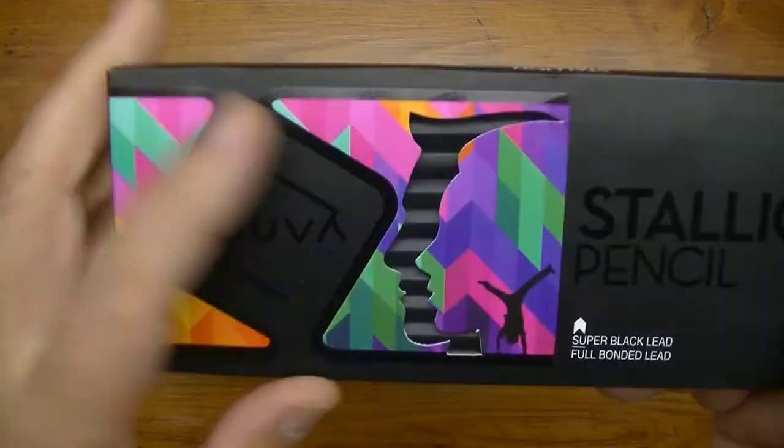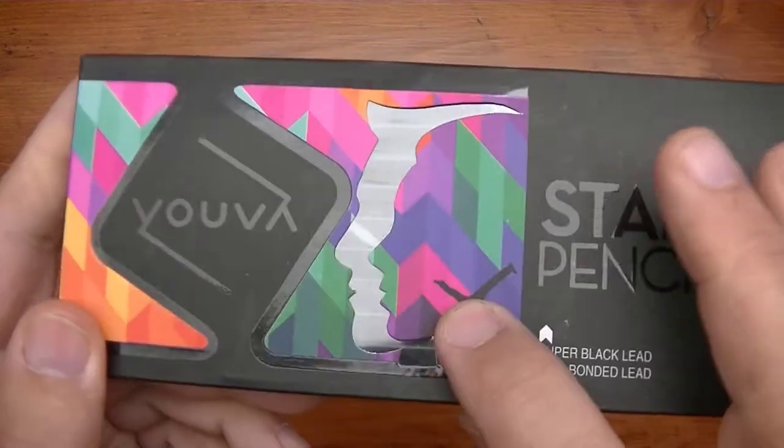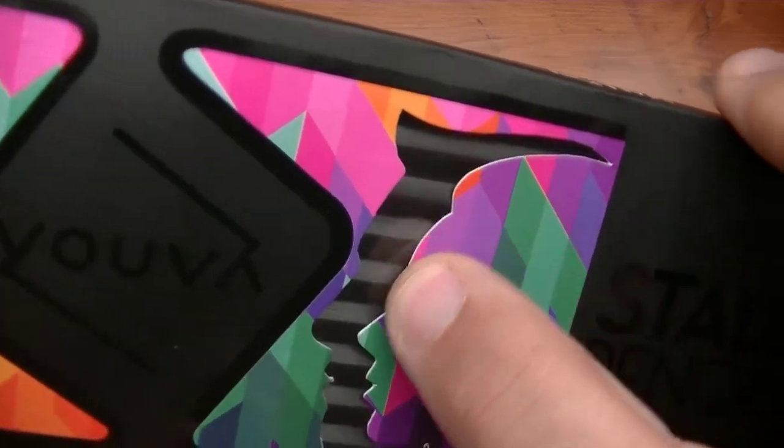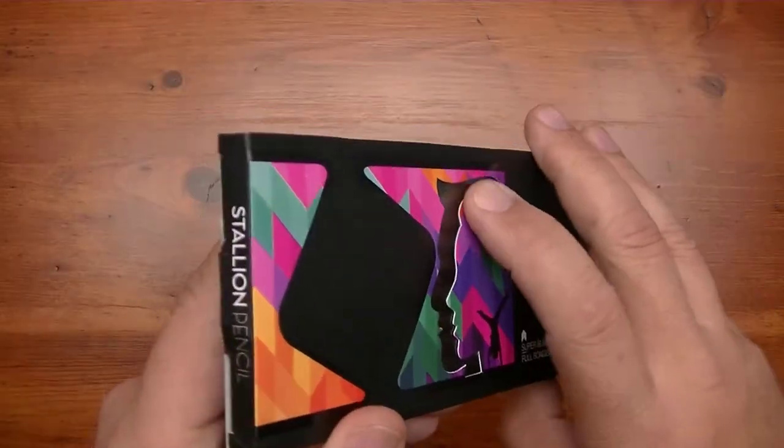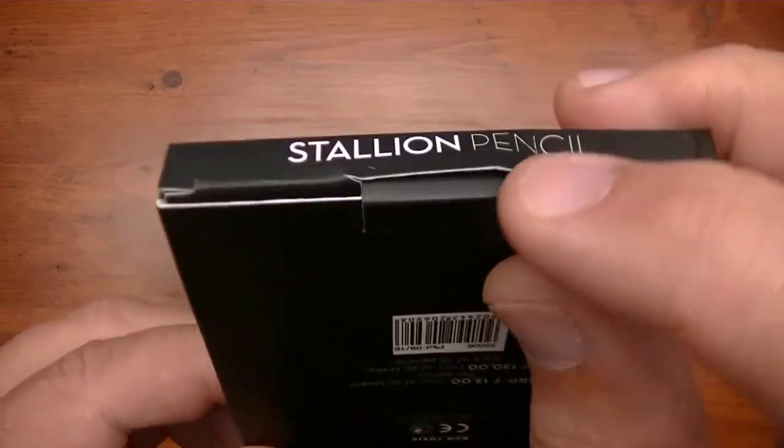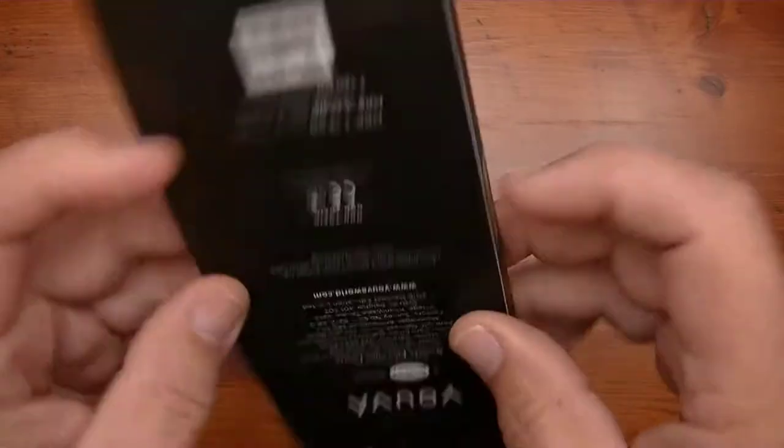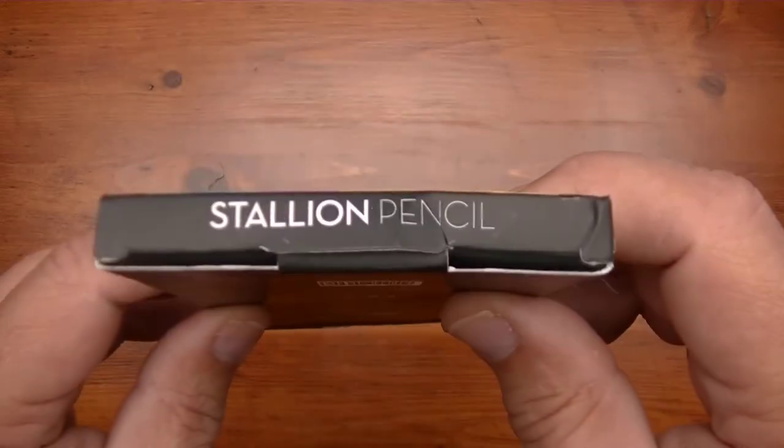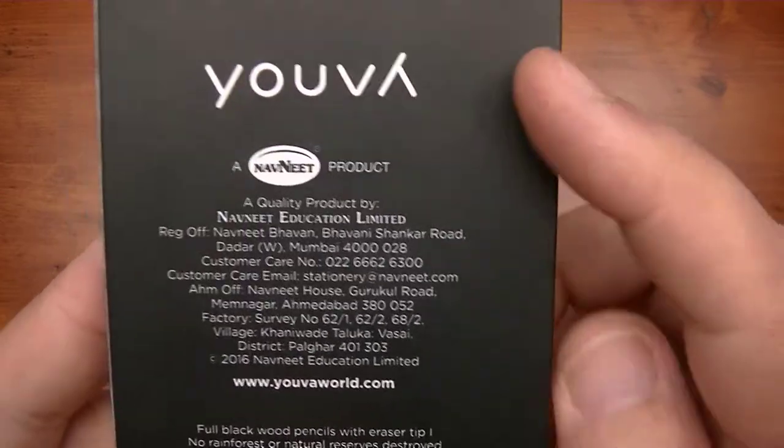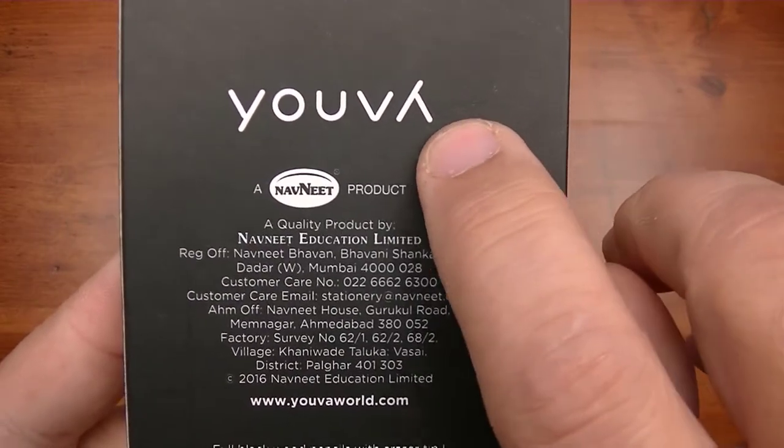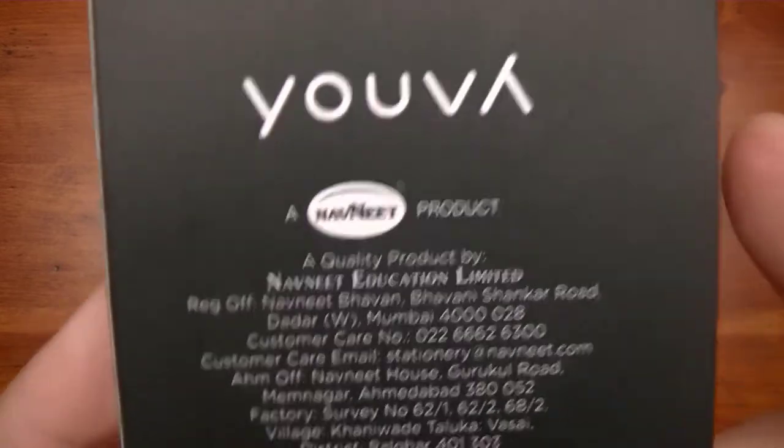First impression: this is a pretty cool looking box. I love the colors here. You have your black with all this nice coloring, and this is a cutout shape of a face. You can see the pencils are showing inside and they look like they're all the same color. It looks like this is already starting to come open.